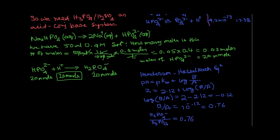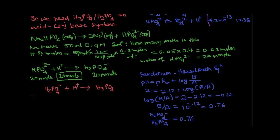We have only H₂PO₄⁻ so far, and we need to convert some of it to H₃PO₄ such that their ratio becomes 0.76. We add a limited quantity of H⁺ to H₂PO₄⁻ to get H₃PO₄. Since this is a strong acid, we use a one-sided arrow. Setting up the ICE chart: the initial concentration of H₂PO₄⁻ is 20 millimoles.